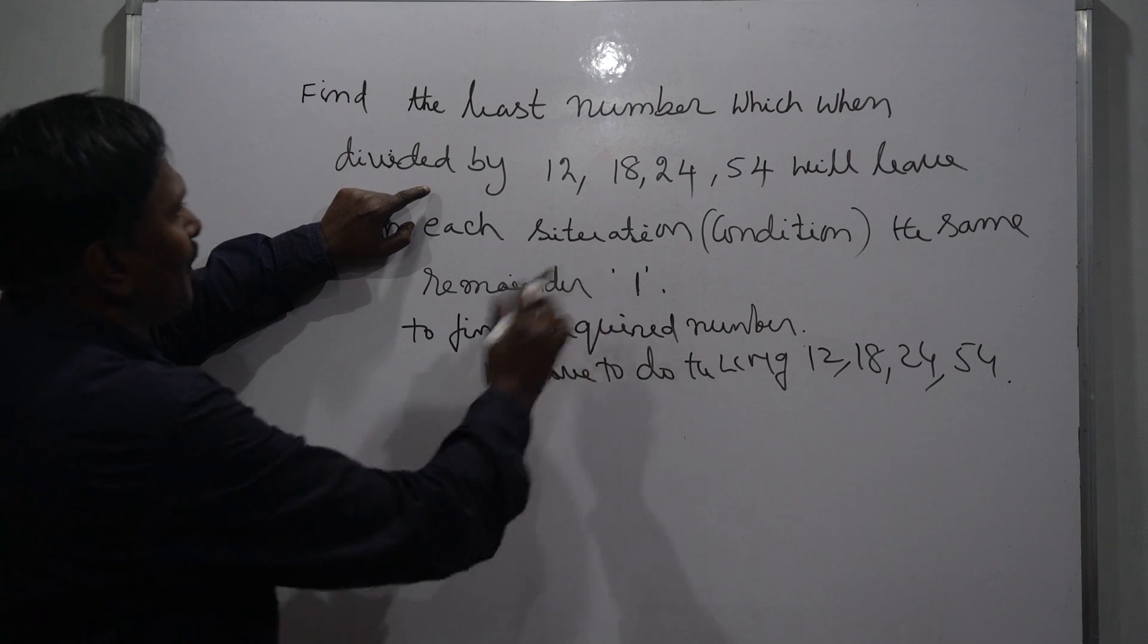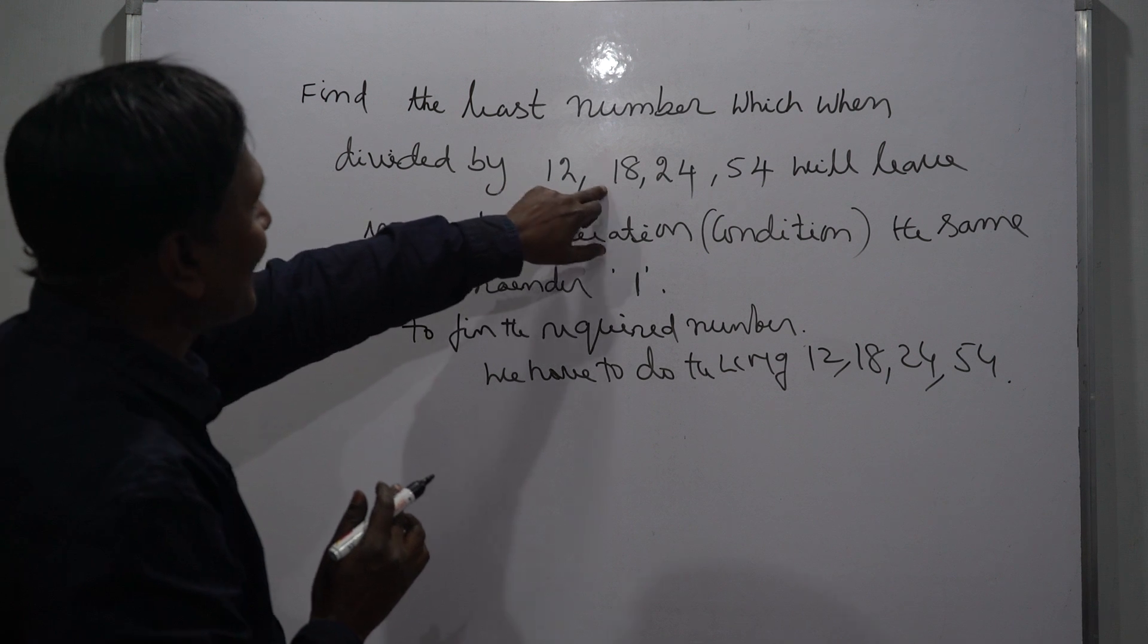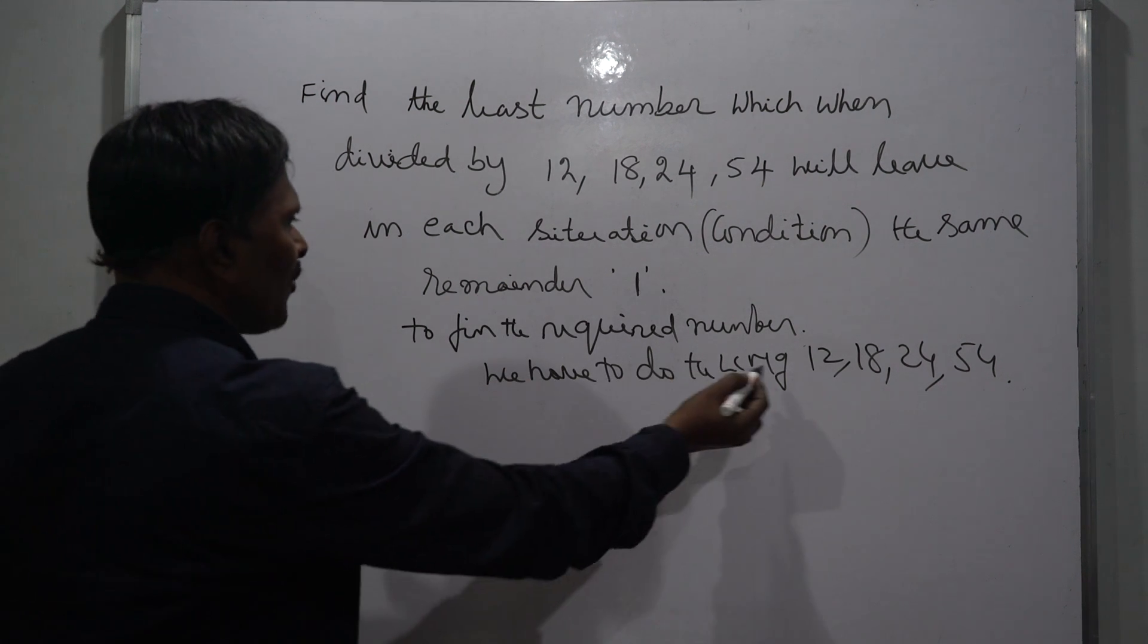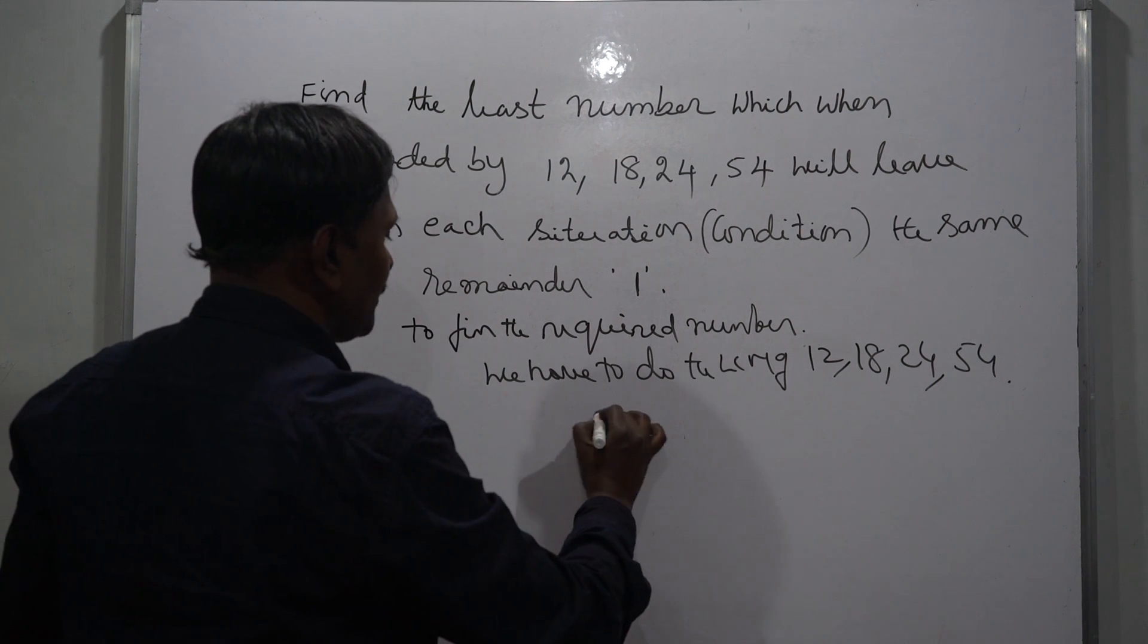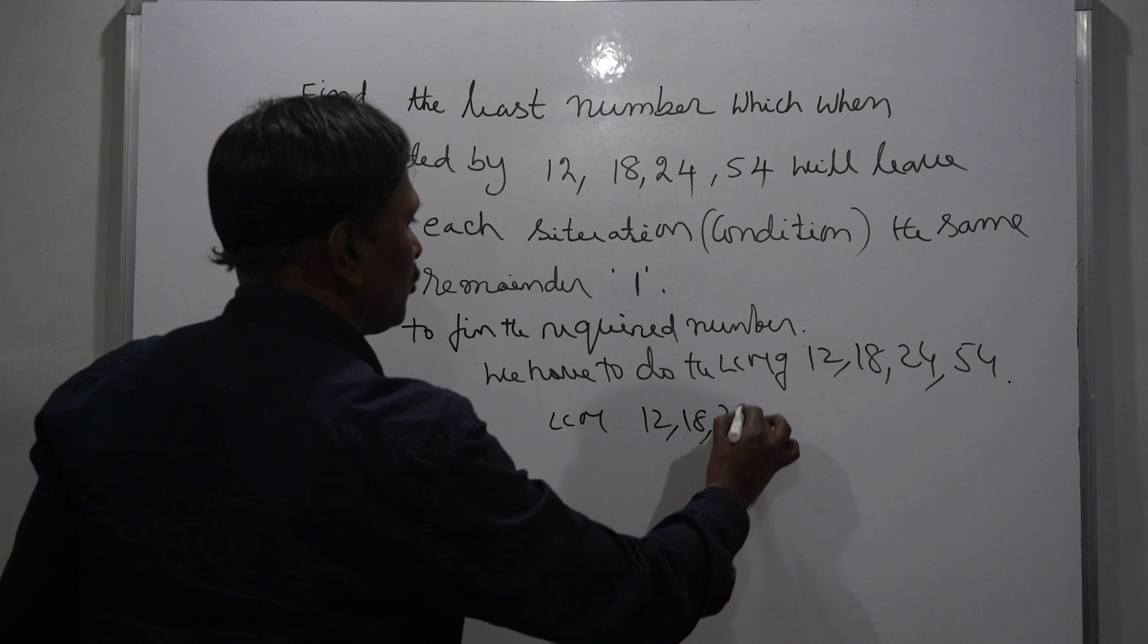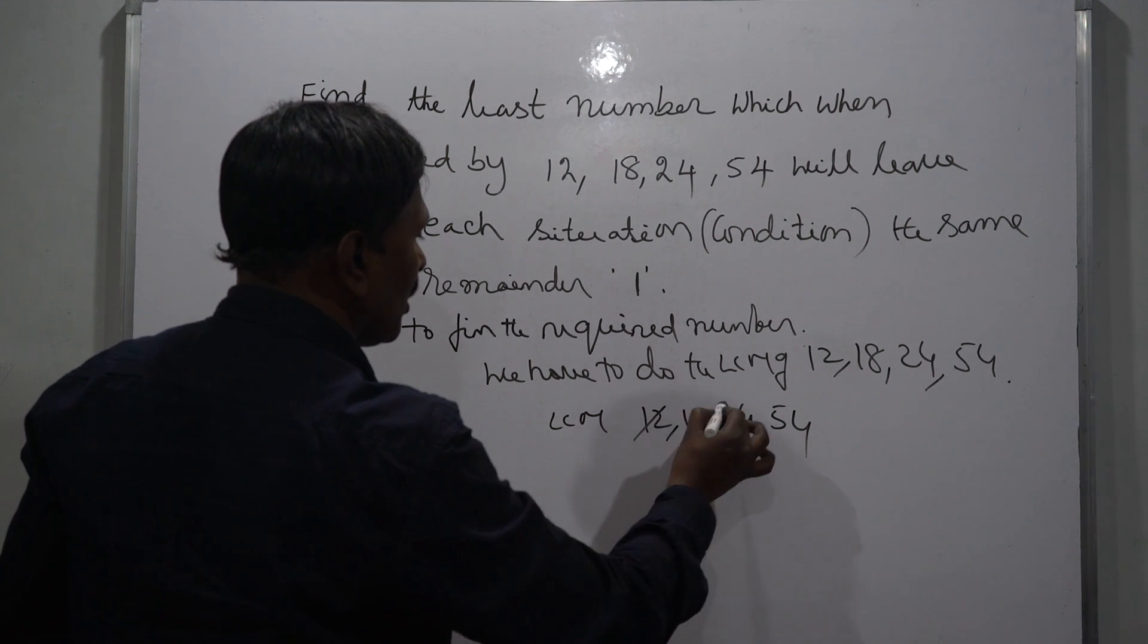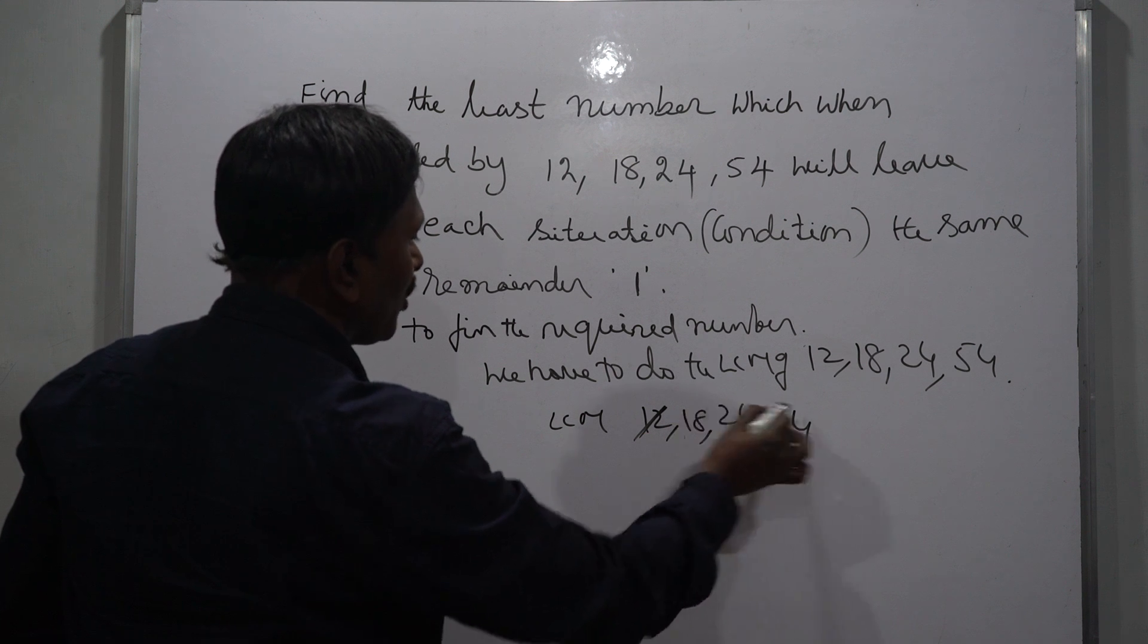So we have to find the LCM of 12, 18, 24, 54. To find the LCM, see: 12 is a multiple of 24, you can eliminate. 18 is a multiple of 54, you can eliminate. So to find the LCM of 12, 18, 24, 54, it is easy to find 24 and 54.